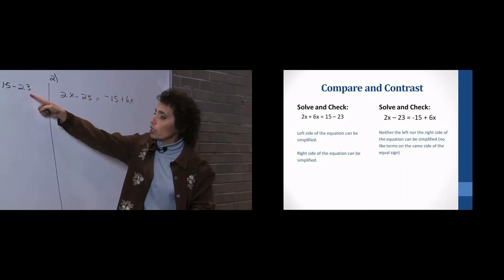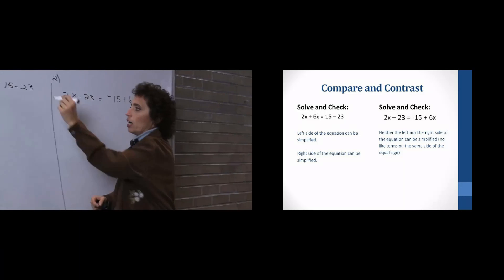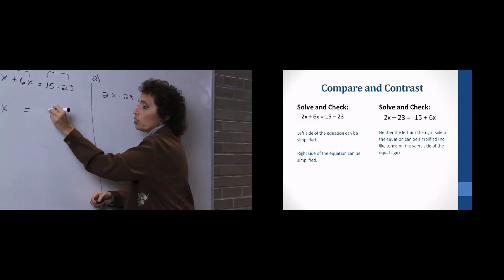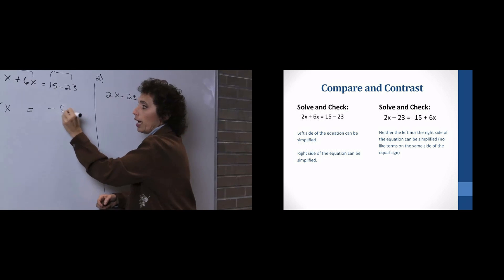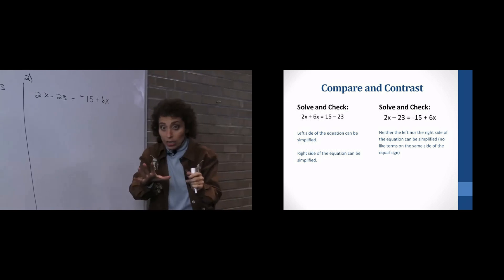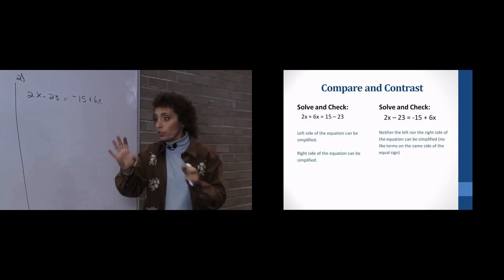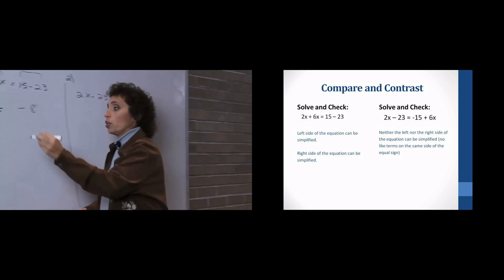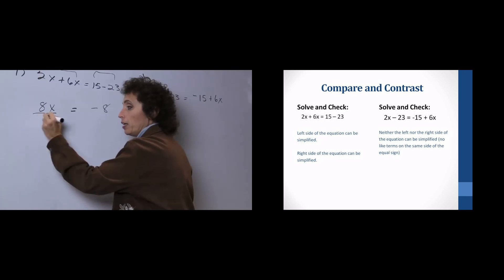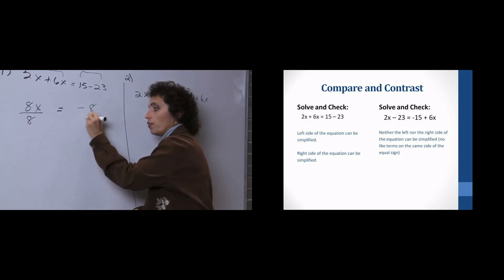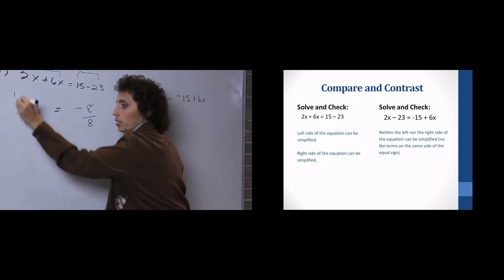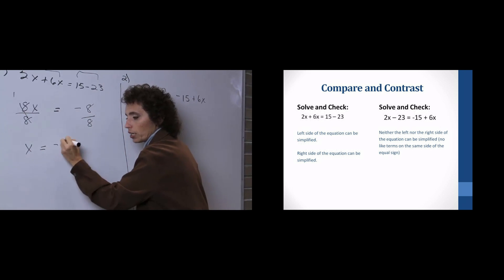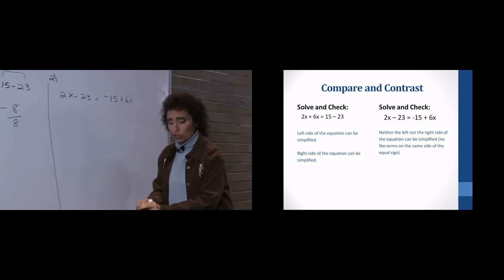Now we're going to go to this side and combine. I have 15, I owe you 23, so I owe you 8. Not done — the coefficient is not 1, so we're going to divide by 8 on both sides. We get x equals negative 1. That's the answer to that question, and you can check it.